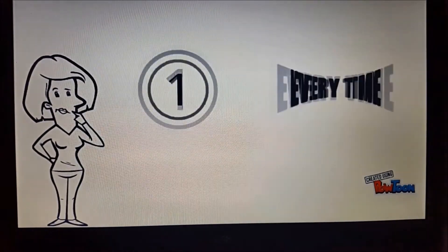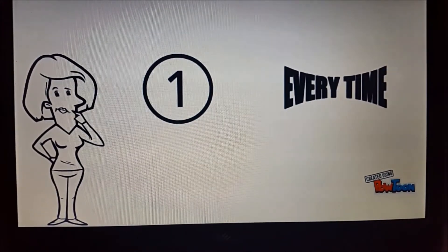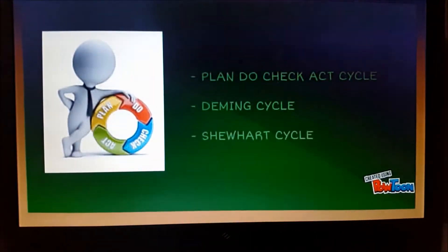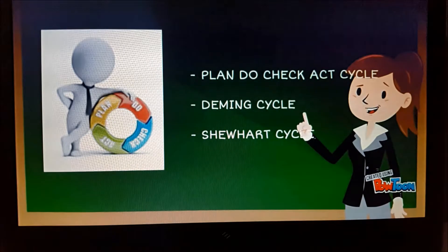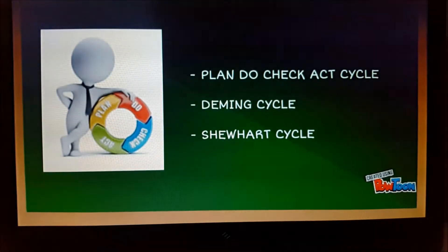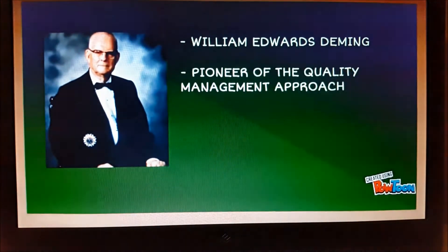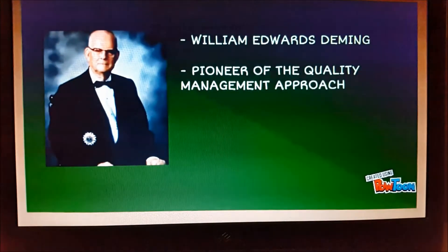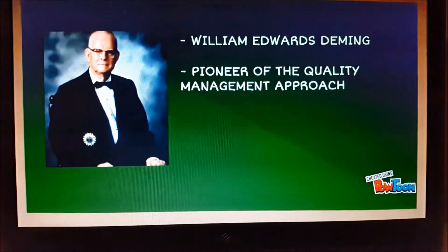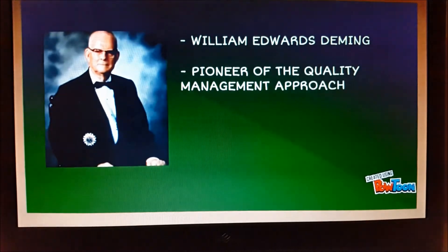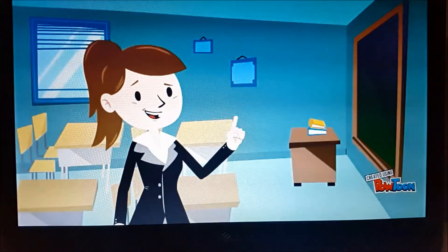So how do you make sure that you get this right — not just this one time, but every time? A popular tool that can be used to solve this problem is known as the Plan-Do-Check-Act Cycle, also referred to as the Deming Cycle or the Shewhart Cycle. Deming is best known as a pioneer of the quality management approach. He believes that a key source of production quality lay in having clearly defined, repeatable processes. And so, the PDCA cycle is very much at the heart of Deming's quality-driven philosophy.